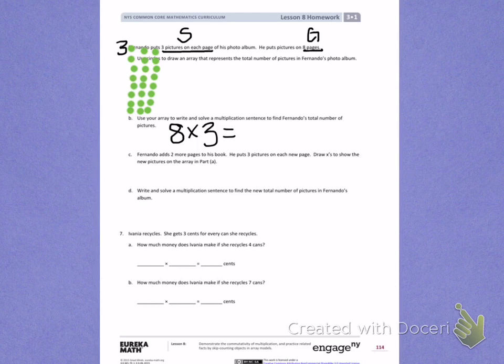Three, six, nine, twelve, fifteen, eighteen, twenty-one, twenty-four. There are twenty-four pictures.